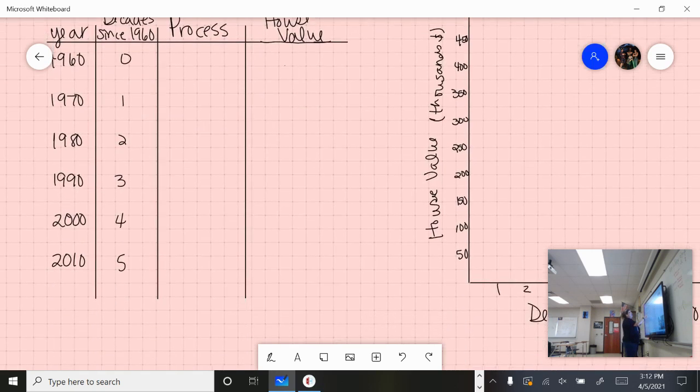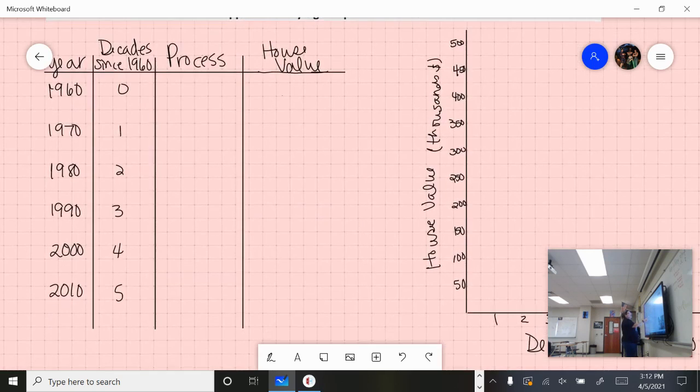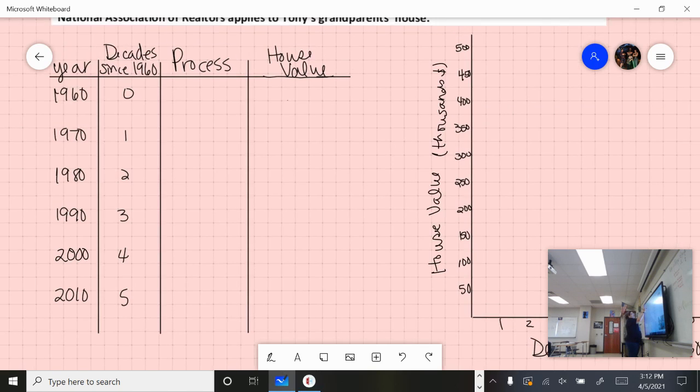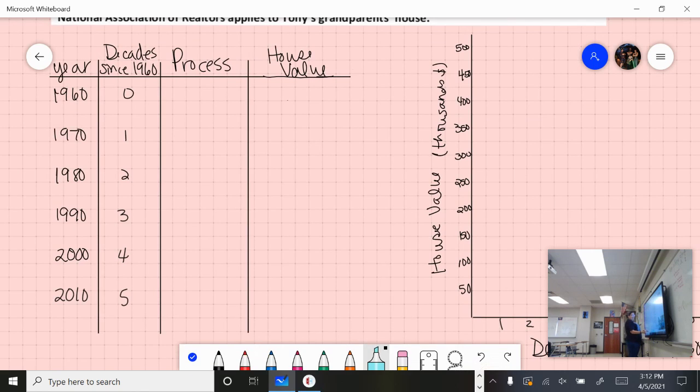Starting with that, in 1960 they bought the house for $10,000. That was the value in 1960. In 1970, by this point the house had doubled in value, so $10,000 times 2, or $20,000.